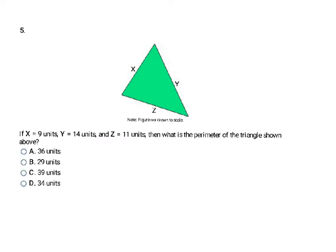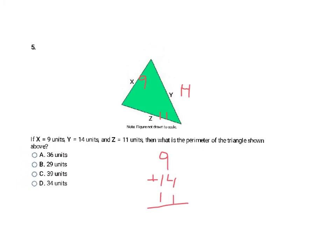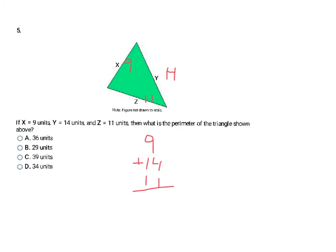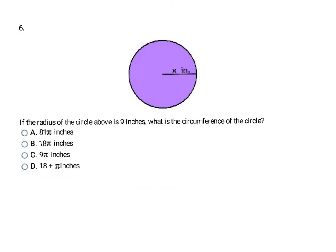This question gives a triangle with side lengths X is 9, Y is 14, and Z is 11. To find the perimeter, add all three side lengths: 9 plus 14 plus 11 equals 34 units — choice D.